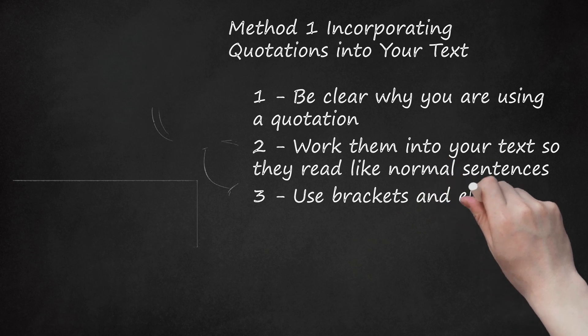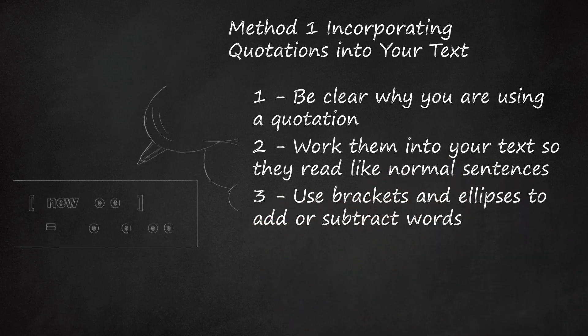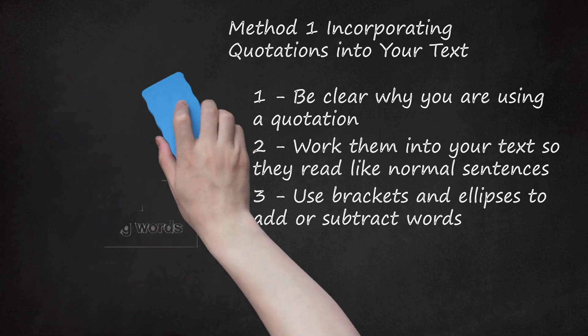Step 3: Use brackets and ellipses to add or subtract words. Sometimes a quotation will support your argument perfectly but be impossible to work into your text without making changes. Insert new words into quotations by putting them inside brackets. Remove existing words by replacing them with an ellipsis. Note that this is only appropriate if you maintain the basic meaning of the quotation — it should not be used to twist an author's words. For example, one could shorten the Nabokov quotation "Art, not an escape, which is only a cleaner cell on a quieter floor, but relief from the itch of being" into "Art, not an escape... but relief from the itch of being."